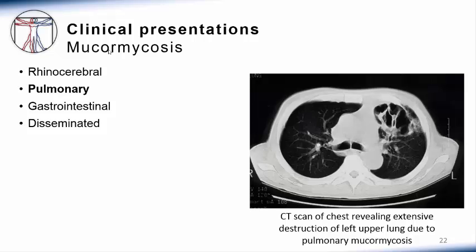Pulmonary mucormycosis is the second most common type of this disease, often presenting as a chronic pneumonia in immunocompromised patients. However, this infection can progress rapidly in neutropenic patients, and it must be considered early in the evaluation of lung infections in these patients. This chest CT scan demonstrates the degree of lung destruction that can result from pulmonary mucormycosis. In neutropenic patients, it can be clinically indistinguishable from other types of pneumonia, especially other fungal pneumonia such as aspergillosis, so an aggressive diagnostic approach is important.